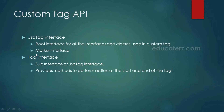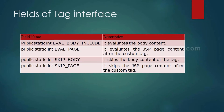The Tag interface is the sub-interface of JSPTag interface, which provides methods to perform some action at the start and end of the tag. It has a few fields: EVAL_BODY_INCLUDE which evaluates the body content, EVAL_PAGE which evaluates the JSP page content after the custom tag, SKIP_BODY which skips the body content of the tag, and SKIP_PAGE which skips the JSP content after the custom tag. The return type of all these fields is int.